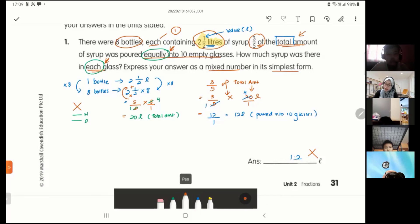I want to know in each glass, so twelve liters divided by ten. Divide is also known as fraction, so twelve over ten. I want a mixed number. Just now Jamal gave me one point two, which is okay, but the question says mixed number. I don't want it to be in decimal. So twelve divided by ten will be one whole, two over ten. They say simplest form, so divided by two equals to one whole, one over five liters. That's my answer.